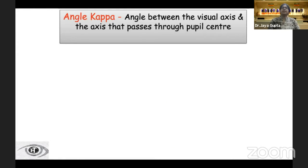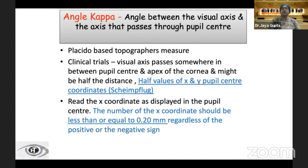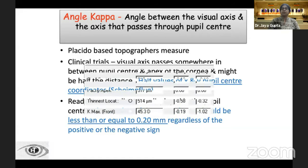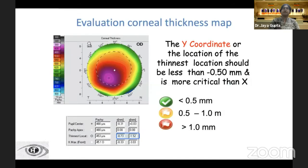The angle kappa is the angle between the visual axis and the axis that passes through the pupil center. Clinical trials have shown that the visual axis passes somewhere between the pupil center and the apex of the cornea, about half the distance. The X-coordinate should be less than 200; anything beyond 200 indicates a decentered pupil and a significant angle kappa. The Y-coordinate, or the location of the thinnest point, should be less than 500 microns — anything more indicates some abnormality.